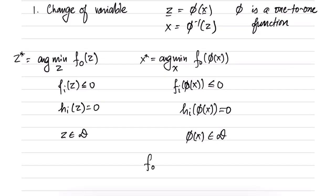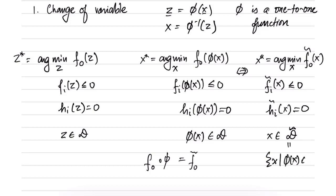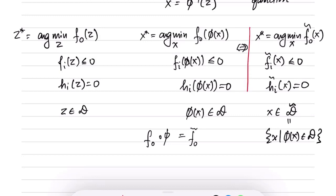Whenever you have a function of the form f ∘ φ, you can always call it by a new function f̃. So this problem can be written as x* = argmin over x of f̃₀(x), subject to f̃ᵢ(x) ≤ 0 and h̃ᵢ(x) = 0, as well as x ∈ D̃. Here D̃ is the set of all x such that φ(x) ∈ D. So this is our new transformed problem.